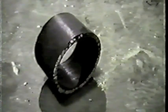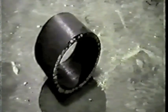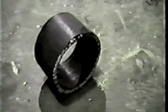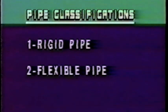Pipe used for sanitary sewer construction is manufactured from various basic materials. Each type of pipe is selected based on its ability to meet the requirements of the application. There are two commonly accepted classifications of pipe: rigid pipe and flexible pipe.